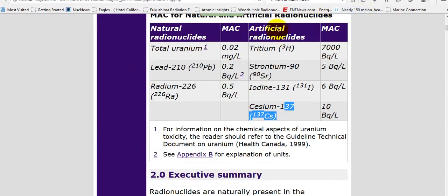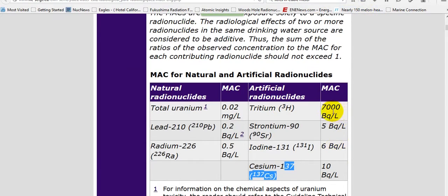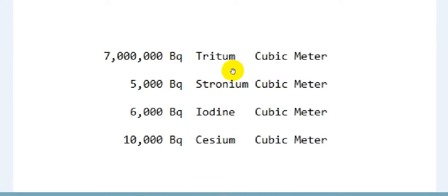That's Health Canada's website today, the 12th of April, 2015. They're saying tritium is an acceptable standard up to 7,000 becquerels a liter. Strontium is 5. When I convert that over to cubic meters, which is the size of your bathtub you put your children in, it's 5,000 becquerels of strontium being soaked into your skin.